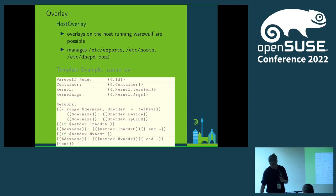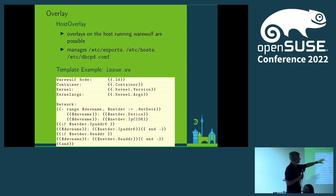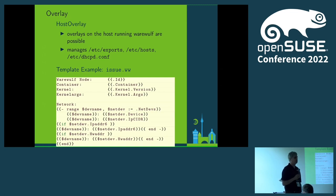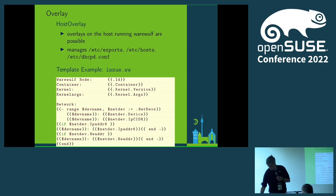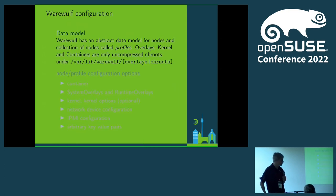At boot, the overlay display shows which node it is, which container has booted, which kernel was used, any additional kernel args, and a list of all the network devices. You can imagine putting many really interesting things into these overlays.